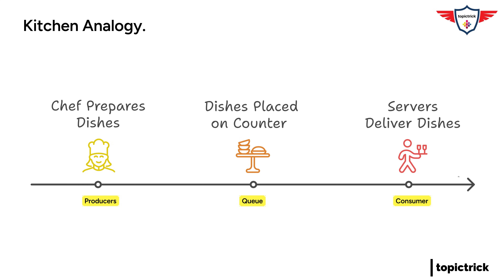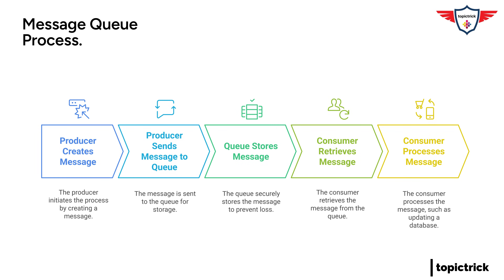So chefs are making the messages, the counter is holding them, and the servers are delivering them. How does this actually work in a software system? First, a producer creates a message and sends it to the queue, just like a chef preparing a dish and placing it on the counter. Then the queue stores this message safely, ensuring it doesn't get lost, and keeps track of the order in which messages arrive — no cutting in line. Finally, a consumer retrieves a message from the queue and processes it, which could be anything from sending an email to updating a database.